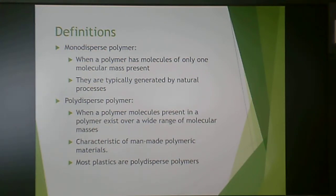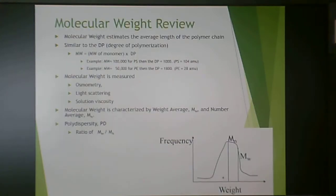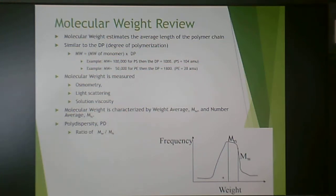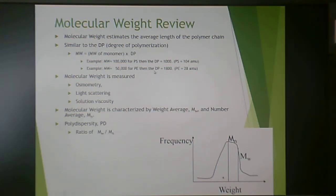Most plastics are polydispersed polymers, and that's actually good for their properties. To review molecular weight: it estimates the average length of the polymer chain present in a sample, similar to the degree of polymerization (DP). Molecular weight (MW) equals the molecular weight of the monomer times the DP. For polystyrene at 100,000 g/mol, the DP is about 1,000 since the styrene monomer weighs about 104 g/mol. For polyethylene at 50,000 g/mol, the DP is actually higher because the molecular mass of the ethylene monomer is lower.